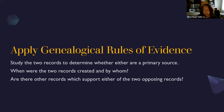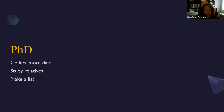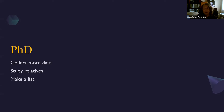As you broaden it out, you have to determine: are there other records which support either of the two opposing records? In this case, PhD is what you're going to be doing — you pile it higher and deeper. More is always more in genealogy, so collect more data, collect as many records as you possibly can find that bear on that conflict.